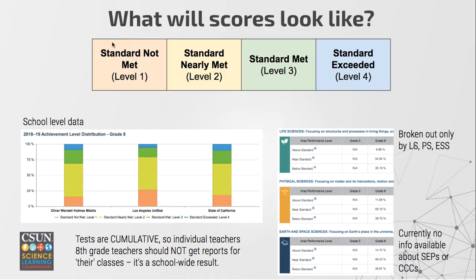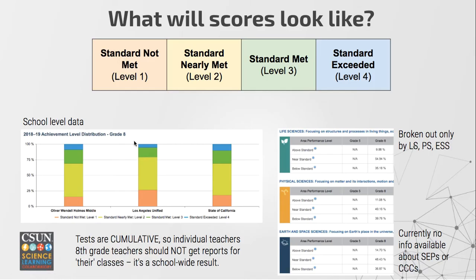At the end you're going to get a score report divided up into color-coded categories of performance, just like all the other state tests in California like ELA and math — where you've either not met the standard, nearly met it, met it, or exceeded it. Here's an example from Holmes Middle School in LAUSD, where their eighth graders had about the same number of people meeting or exceeding the standard as the California state average, and they're a little bit higher than the district average.